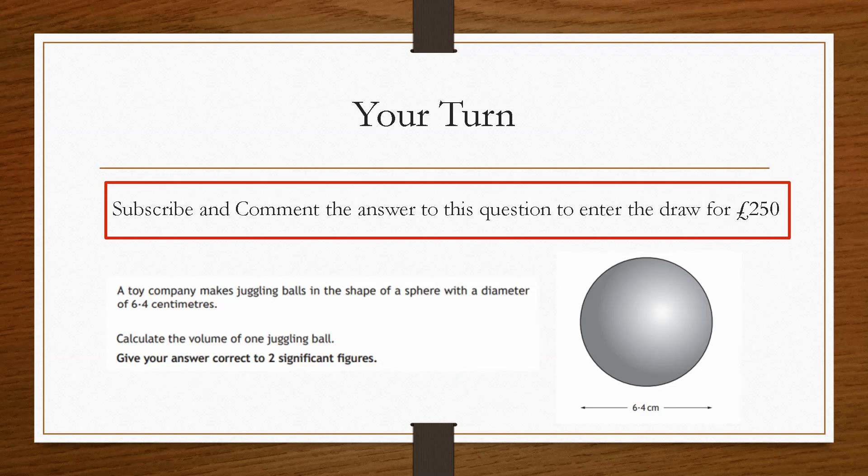So now it is your turn. In order to qualify for the £250 draw at the end of each month in 2021, all you have to do is subscribe to the channel and comment the correct answer to this question in the comment section below. Only valid subscribers with the correct answer will be entered into the draw. So this question says a toy company makes juggling balls in the shape of a sphere with a diameter of 6.4 centimetres. Calculate the volume of one juggling ball and give your answer correct to two significant figures.